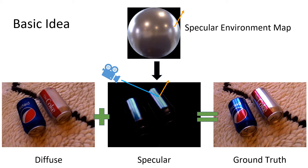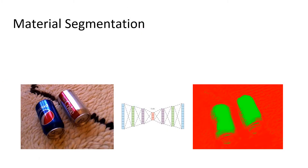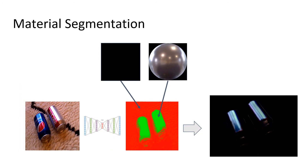This forward model allows us to optimize for the specular environment maps that best reproduce the ground truth input views. Because there are many different materials in a scene, we predict the material weight using a neural network that is trained for each scene, given a user-decided number of material bases. We can then linearly blend the environment maps using the material weighting from the network to render specular highlights.